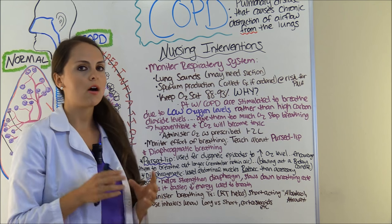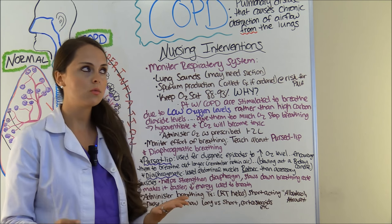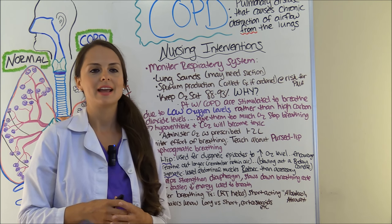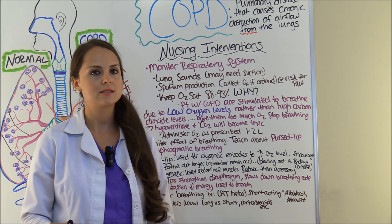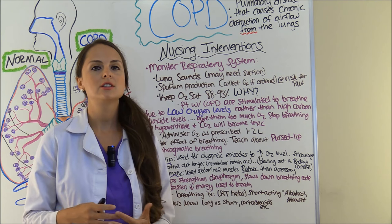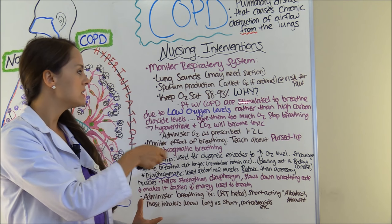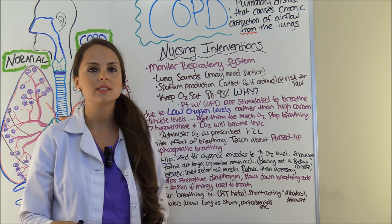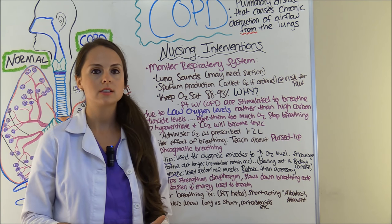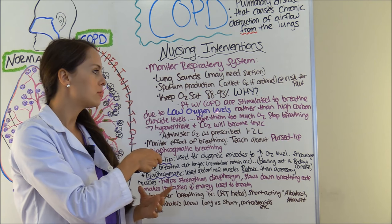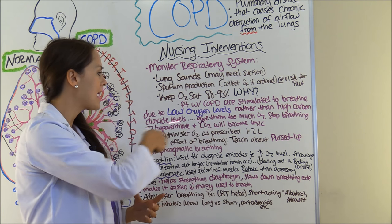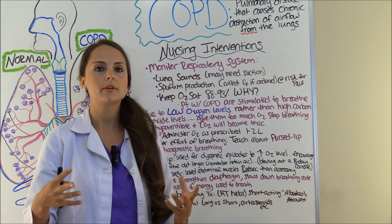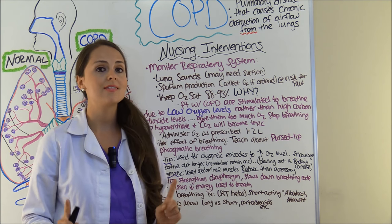You want to monitor oxygen saturation and keep it between 88 to 93%. A lot of people ask why not 95 to 100. The reason is because of how COPD patients are stimulated to breathe — they are stimulated to breathe due to low oxygen levels because of the obstructive airflow. So they're stimulated to breathe by low oxygen levels rather than high carbon dioxide levels, which is how a person with healthy lungs is stimulated to breathe.